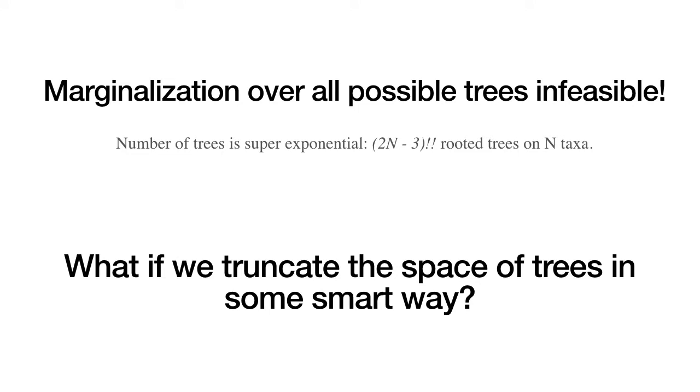As we all know, the total number of phylogenetic trees is superexponential in the number of taxa. The focus of this project is, what if we truncate the space of trees in some smart and interesting way? Then can we marginalize over the trees? And what can we gain?